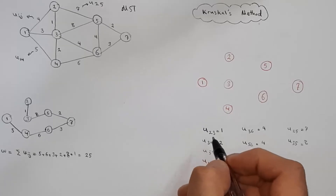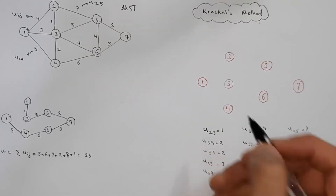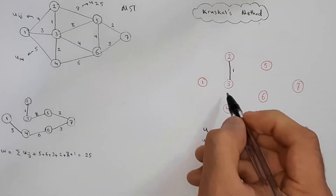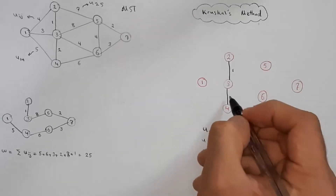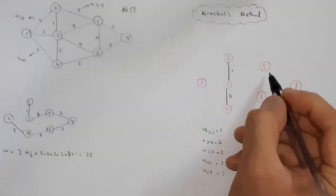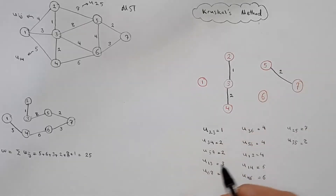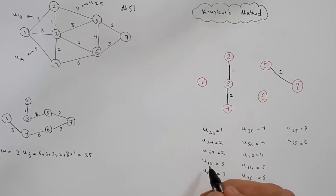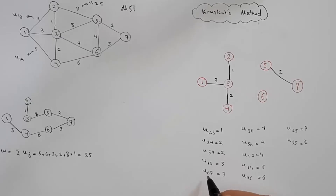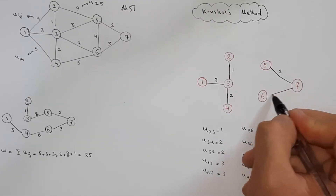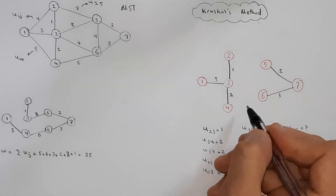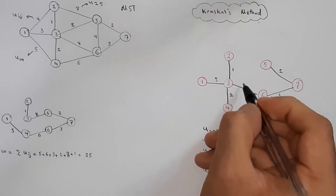So let's do it. First, we draw a line between 2 and 3 with a weight of 1. Then we draw a line between 3 and 4 with a weight of 2. Then we draw a line between 5 and 7 with a weight of 2. Then we draw a line between 1 and 3 with a weight of 3. Then a line between 6 and 7 with a weight of 3. Then a line between 3 and 6 with a weight of 4.